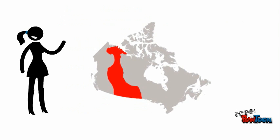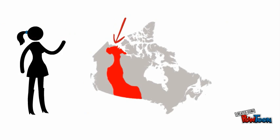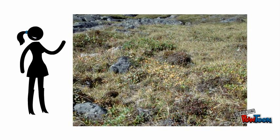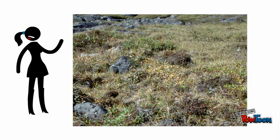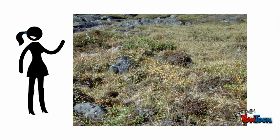In the far northern part of the interior plains, the winter is cold and the summer is very short. Therefore, only small plants, grasses, and mosses grow. There are no trees found in the northern part of the interior plains.